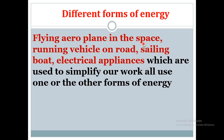Flying aeroplanes in the sky, running vehicles on the road, sailing boats, and electrical appliances used to simplify our work all use one or other forms of energy. So aeroplanes, vehicles, boats, and all electrical equipment we use at home to simplify our work use one or other form of energy. Let's see briefly about different forms of energy.